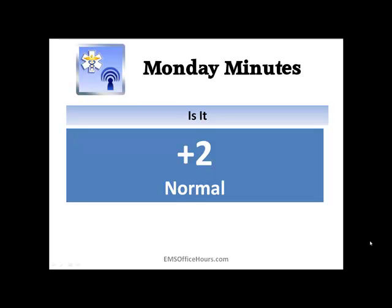Plus 2 is pretty much the normal pulse. Plus 3 is when the pulse is increased — not increased in speed, but an increase in the force, an increase in the pressure, an increase in the volume. And plus 4 is that very, very strong, very bounding pulse. Again, not necessarily about rate, but we're talking about the force of that pulse that you're feeling against your fingers when you're taking the patient's pulse.